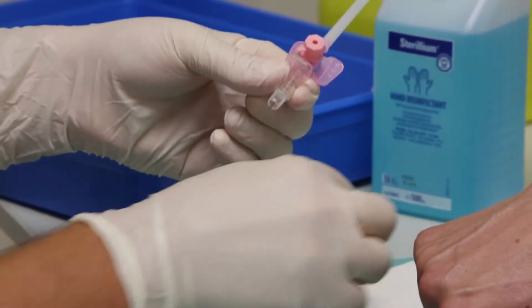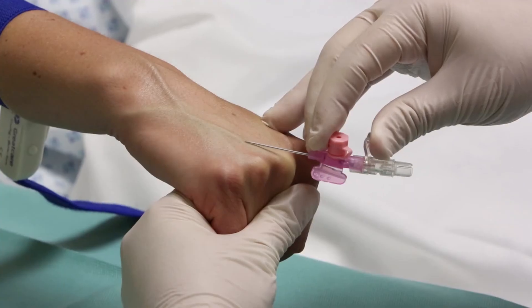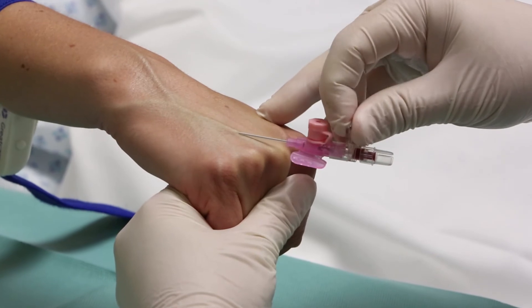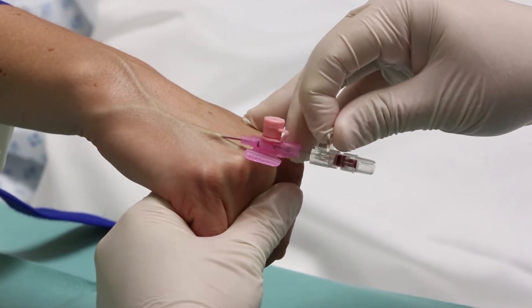Step 11. Anchor the vein below the puncture site and insert the cannula using non-touch technique. If it is necessary to repalpate the vein, the site must be recleaned before cannulation.